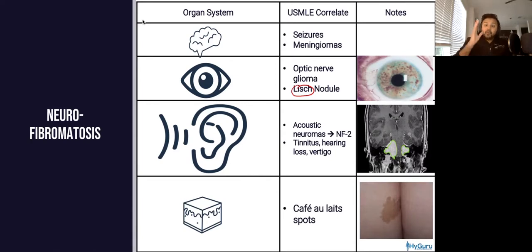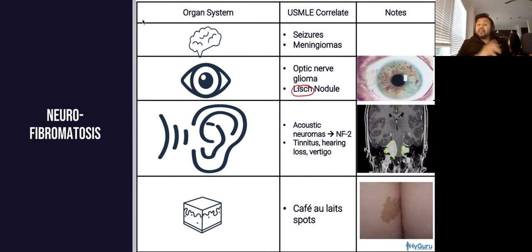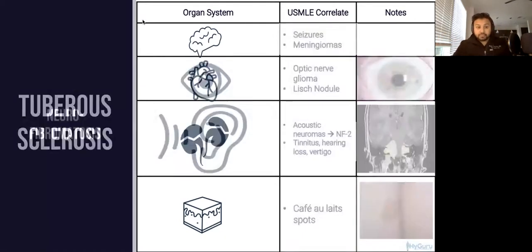Remember that when you see café au lait spots, don't always knee-jerk to neurofibromatosis. If they have precocious puberty and bone findings, you're going to be thinking about McCune-Albright syndrome.